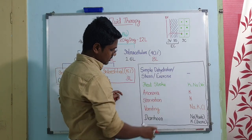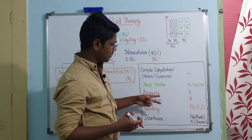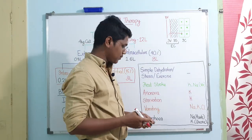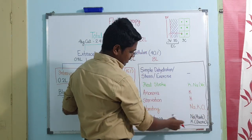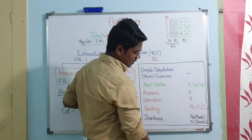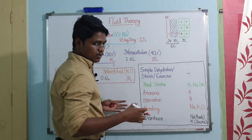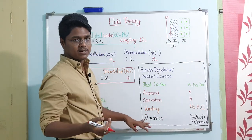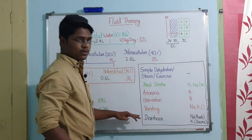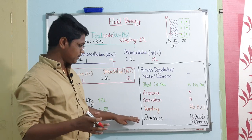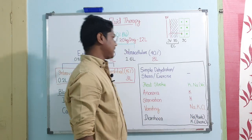In anorexia and starvation - you will find these cases in summer season - potassium ion loss is more. In vomiting, sodium, potassium, and chloride are lost. In diarrhea, if it is an acute case, mostly sodium ion loss; if it is a chronic case, potassium ion loss. You will find many teachers saying vomiting is more serious than diarrhea - because three ions are being lost. If you get a case of both persistent vomiting and diarrhea, still treat persistent vomiting first.